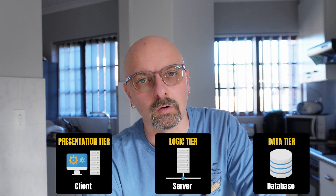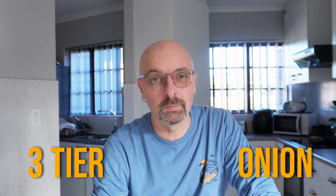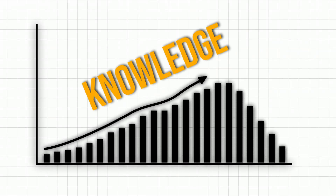Most people don't have a problem understanding the 3-tier or N-tier architecture. But after a few years of software development, you start looking at other architectures, and you end up on onion or clean architecture. The knowledge gap between N-tier and onion architecture is just ridiculous. There seems to be no gradual increase in knowledge for software architecture — it's either really simple or really complicated.